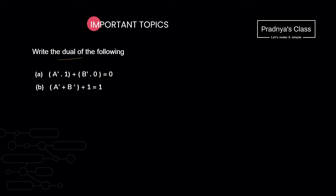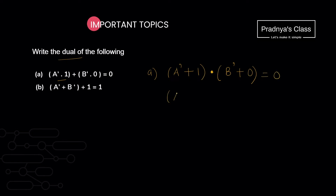Let's solve one question based on it — we need to find the dual of the following expression. In bracket we have A-complement; it will remain as is. It is followed by dot — dot means AND — it will get replaced with OR. After the bracket there is plus — plus means OR — it will get replaced with AND. In the second bracket there is B-complement, as is. Dot means AND, it will get replaced with OR. Placing 0 as is for now, equals to 0. In the next step we replace 1 with 0 and 0 with 1. So it will be A-complement plus 0, dot B-complement plus 1, equals to 1. In this way we got the dual.